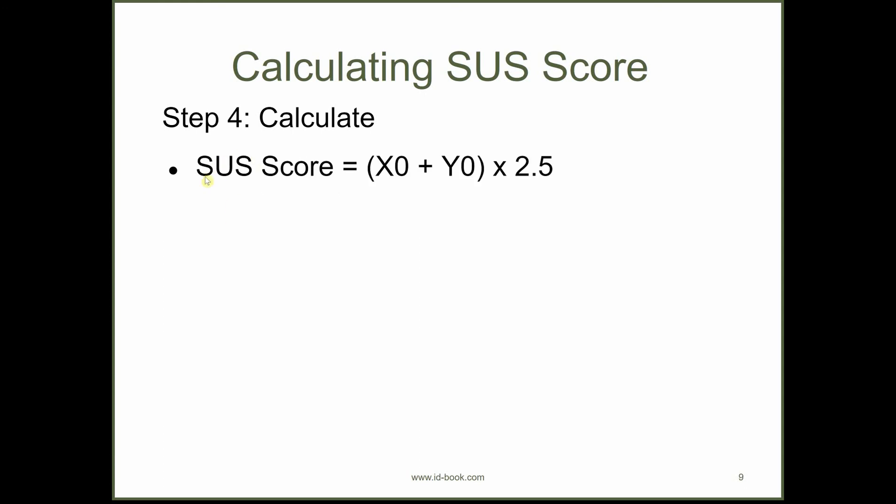Then the last step is calculating the SUS score, and this score is calculated by adding x0 and y0 that were calculated in the previous steps, and then multiplying it with 2.5. I'll show you an example of how it's done.